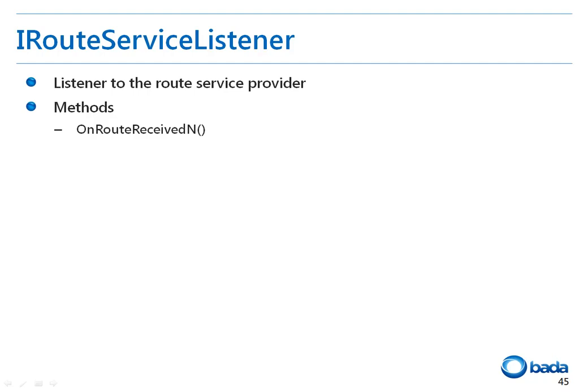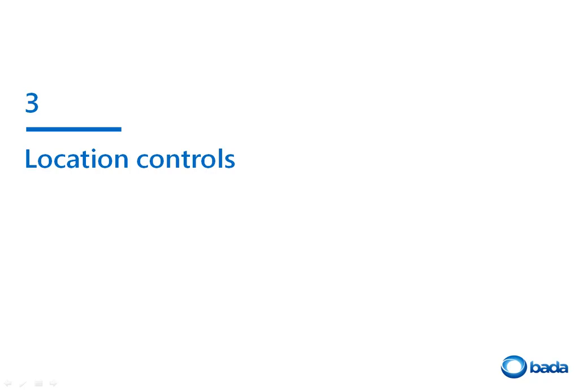iRouteServiceListener is the listener used in the route service. Applications implement this interface and register it in the service request in iRouteServiceProvider to obtain search results from the service provider. The only method available in this listener is the OnRouteReceivedN method, which is called by the route service provider when the requested route has been calculated by the GetRoute method. Let's discuss the third and last namespace: Location Controls.